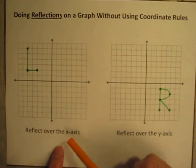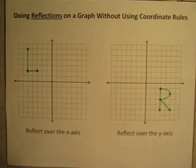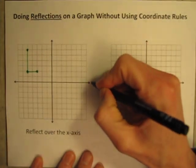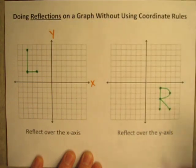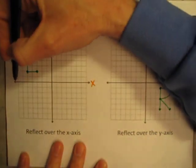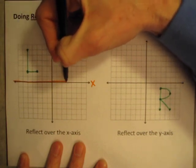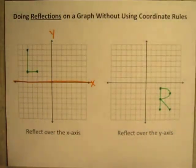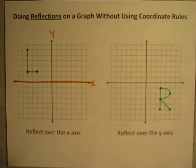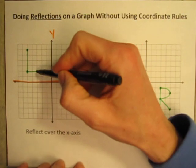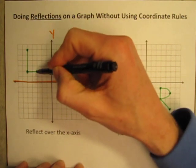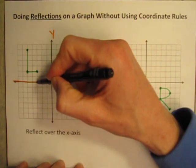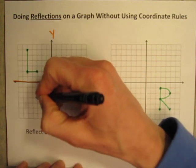Let's start with this letter L and reflect it over the x-axis. First, make sure you know which axis is which — this one is the x-axis and this one is the y-axis. So my line of reflection is going to be right here along the x-axis. To reflect, I just look at one point at a time. I count how far it is from the line of reflection. This point happens to be two spaces above the line of reflection, so I'm going to reflect it two spaces below to the other side.